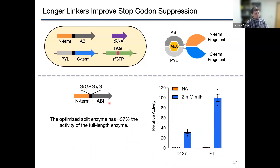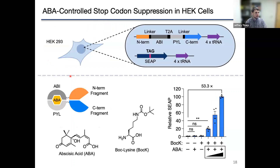As a trade-off between activity and background signal, we carried forward with the n equals 4 linker as our optimized variant. Comparing this variant to the wild-type non-split enzyme, it retained about 37 percent of the activity as measured with our GFP assay, which we were pretty satisfied with — quite good compared to other split enzymes reported in the literature. Finally, we wanted to know if we could use our split pyrrolysyl tRNA synthetase to control gene expression in eukaryotic cells. We co-expressed the ABI- and PYL-fused PylRS fragments as one gene using a self-cleaving T2A peptide, co-expressed with eight copies of the pyrrolysine tRNA.